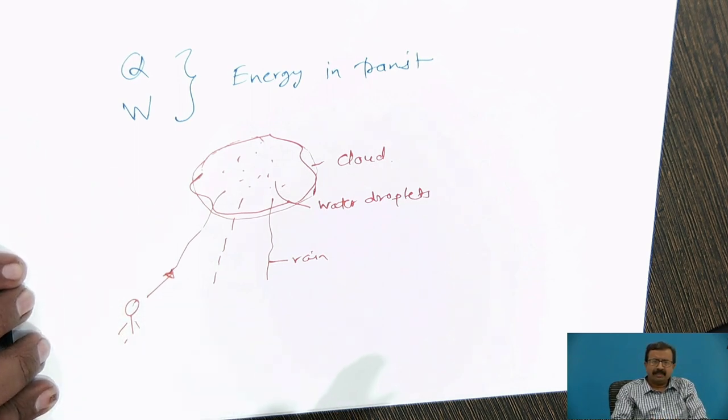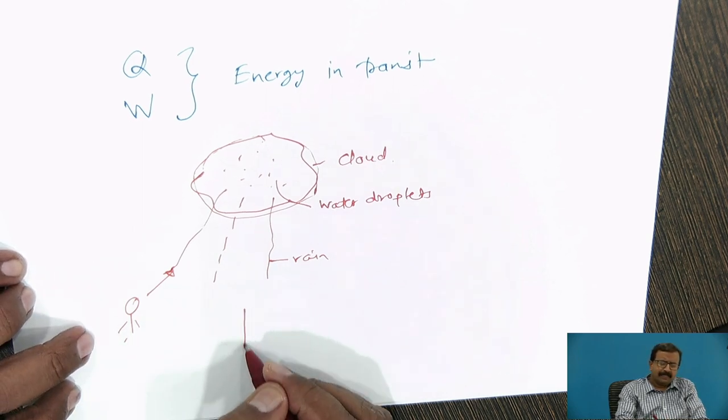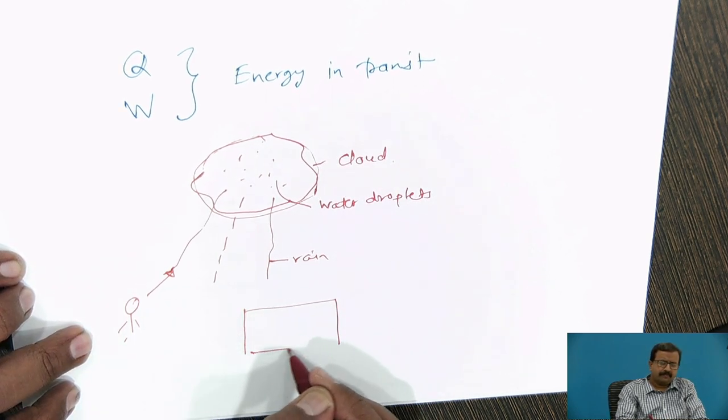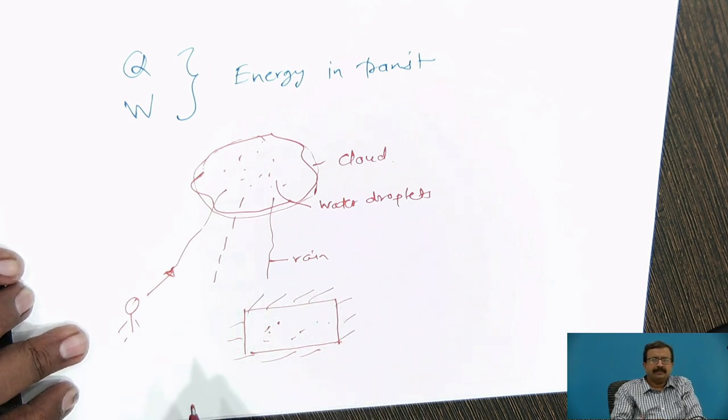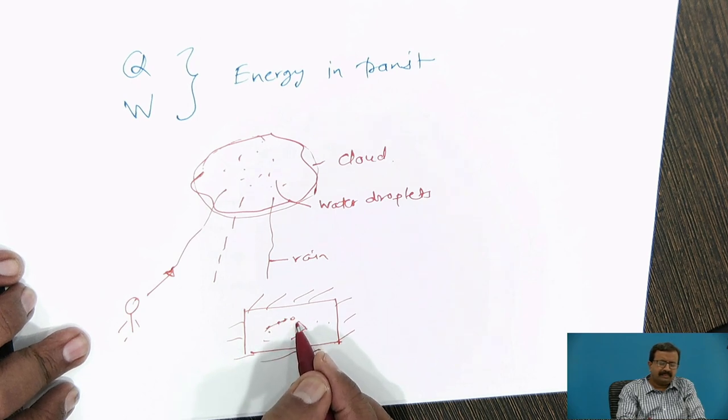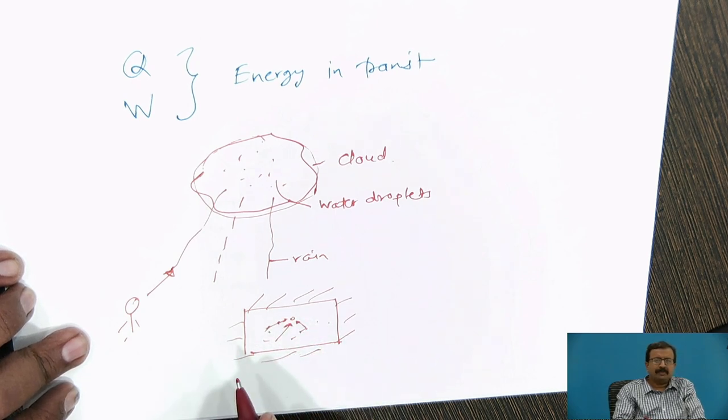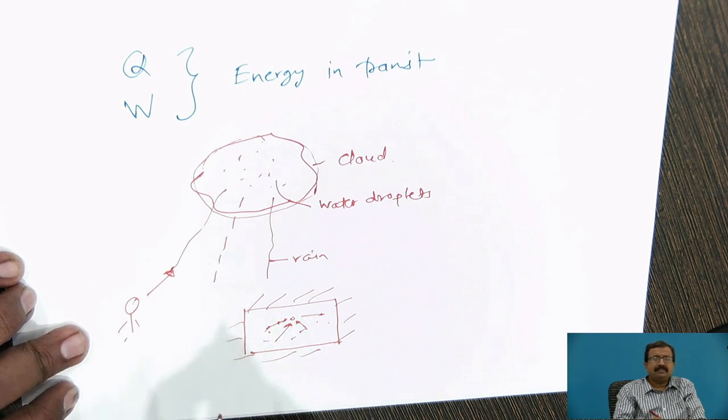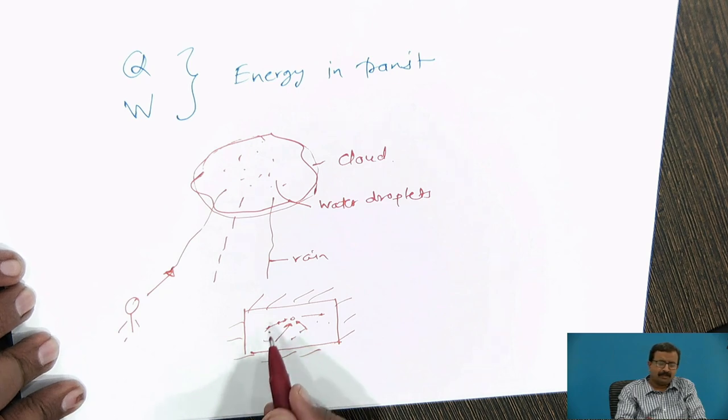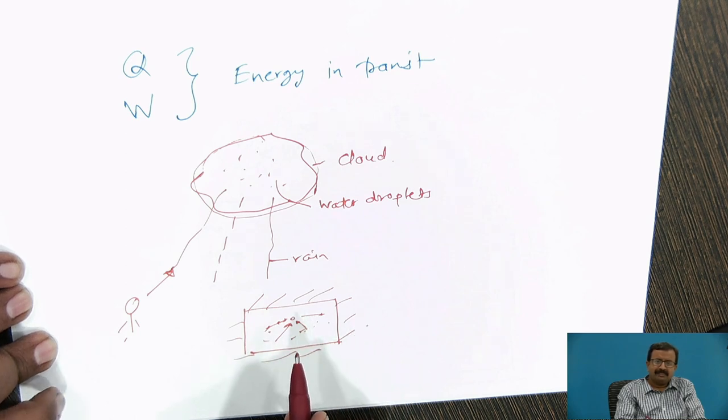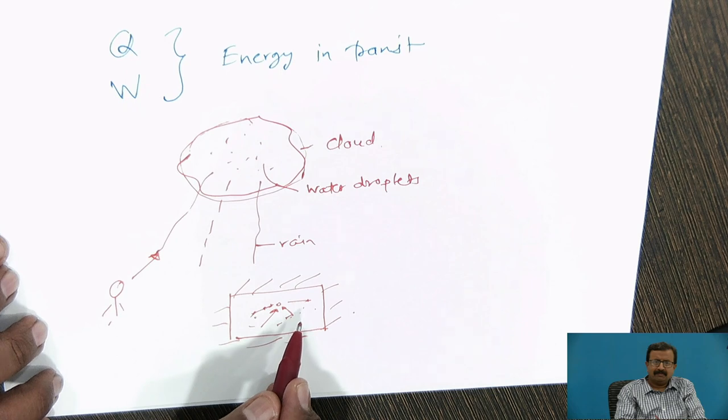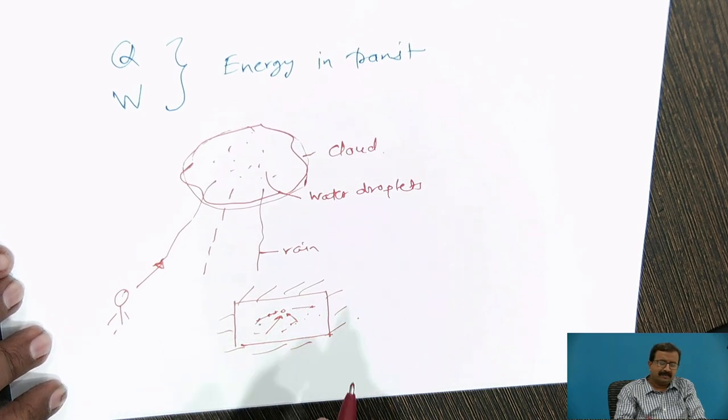Q and W are energy in transit. Whenever they cross the boundary, it is called as work or heat. Take a simple example. Suppose this is a container in which there are a number of molecules. I isolate this particular chamber. These molecules are striking. But these are the transfers taking place inside, and there is no external force acting. Because of this, the work is not crossing the boundary. And when work is not crossing the boundary, it cannot be called as a thermodynamic work. That is the first thing that you must know as a basic learner.